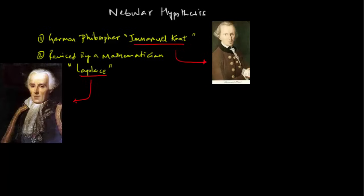Now, many hypotheses were recommended by various philosophers and scientists regarding the origin of the Earth. One of the earlier and popular arguments was made by a German philosopher named Immanuel Kant, and later on, a mathematician named Laplace revised it in 1796.